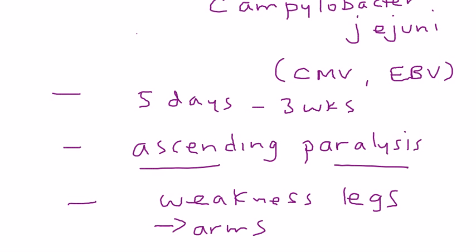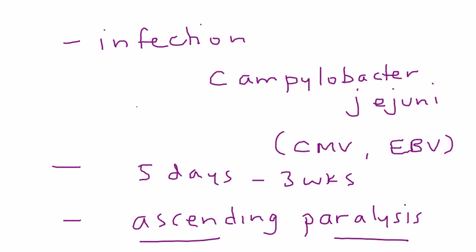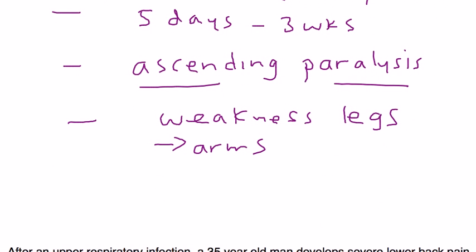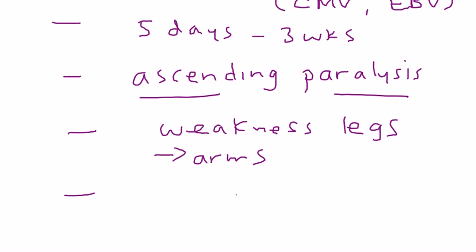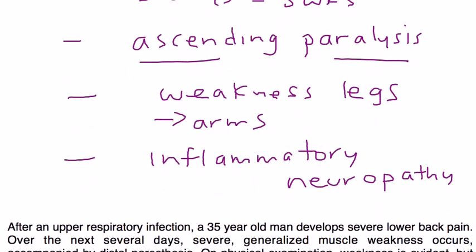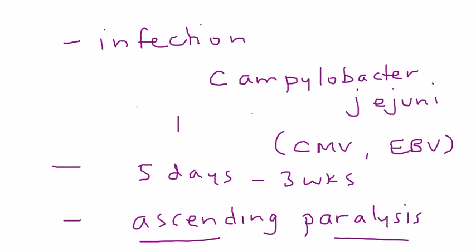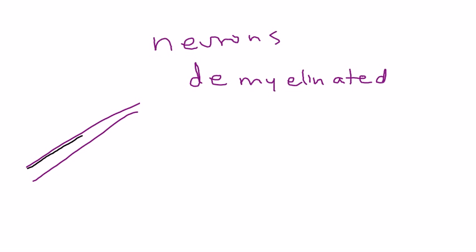Initially they have weakness in their legs and then eventually it progresses up to their arms. This is what they mean by ascending paralysis. So why is this weakness and paralysis happening? Well, it goes back to what we talked about earlier: it's a demyelinating disorder. Another way of thinking about this is an inflammatory neuropathy. It affects the neurons which are demyelinated.